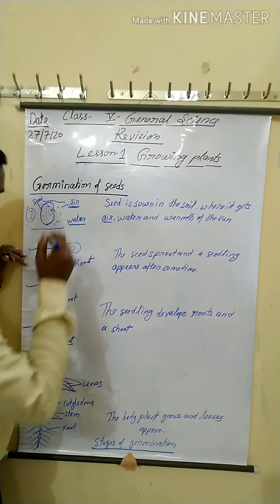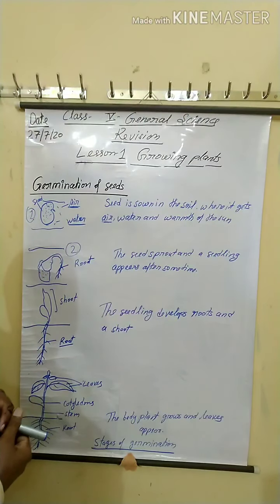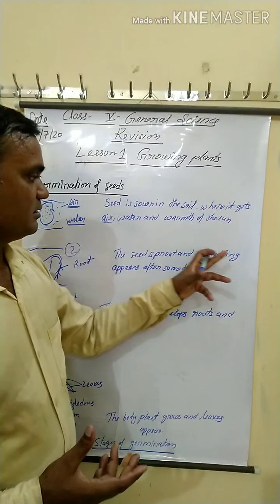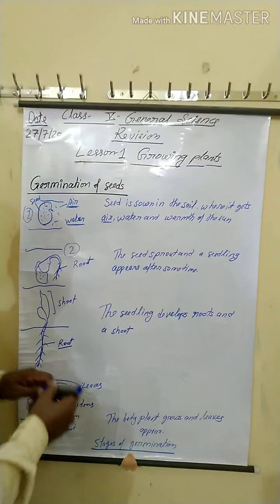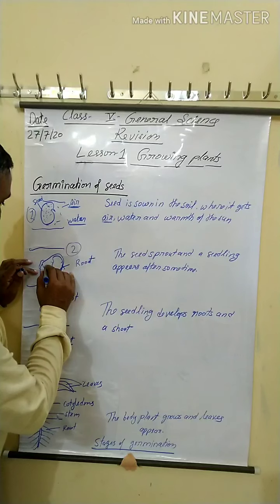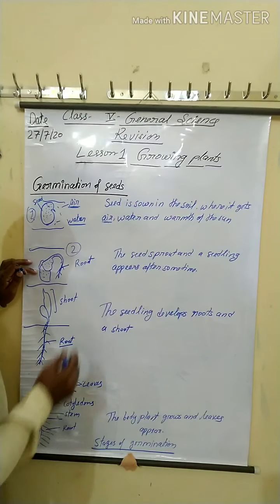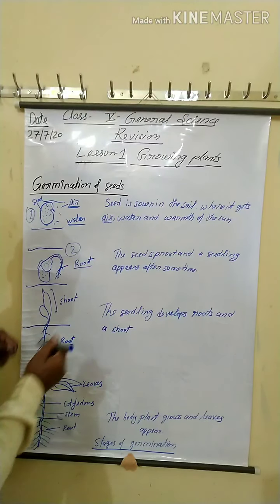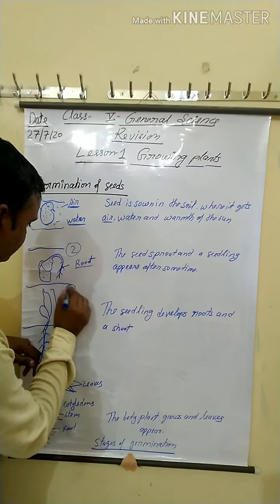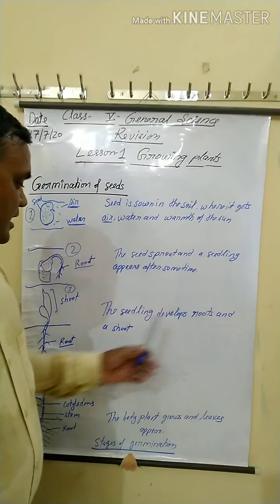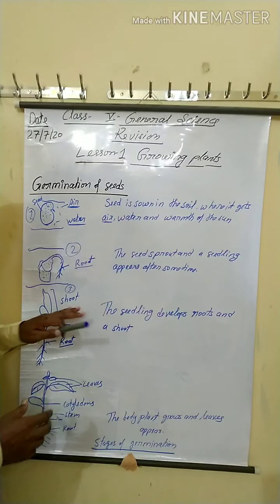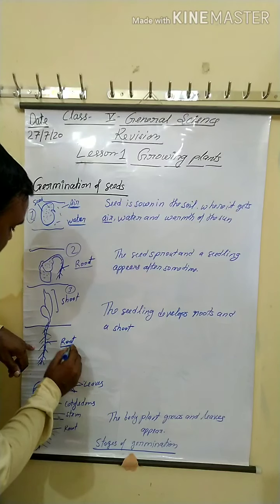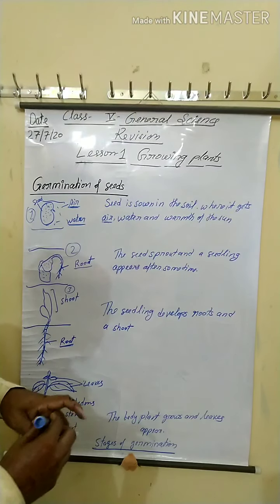Second stage: after a few days, the seeds sprout and a seedling appears. The small baby plant starts to develop and the first root develops. Third stage: the seedling develops roots and shoots. Roots are well developed. Below the ground is called the root system, and above the ground is the shoot system.